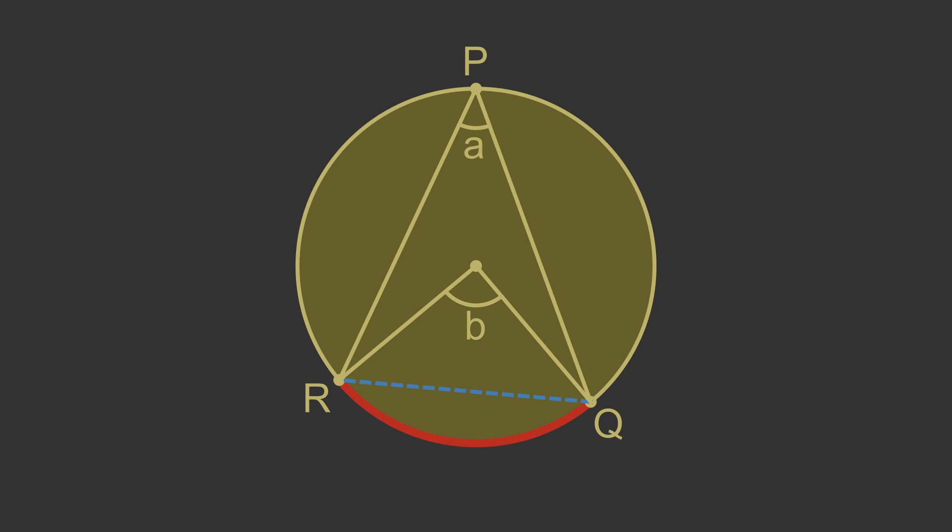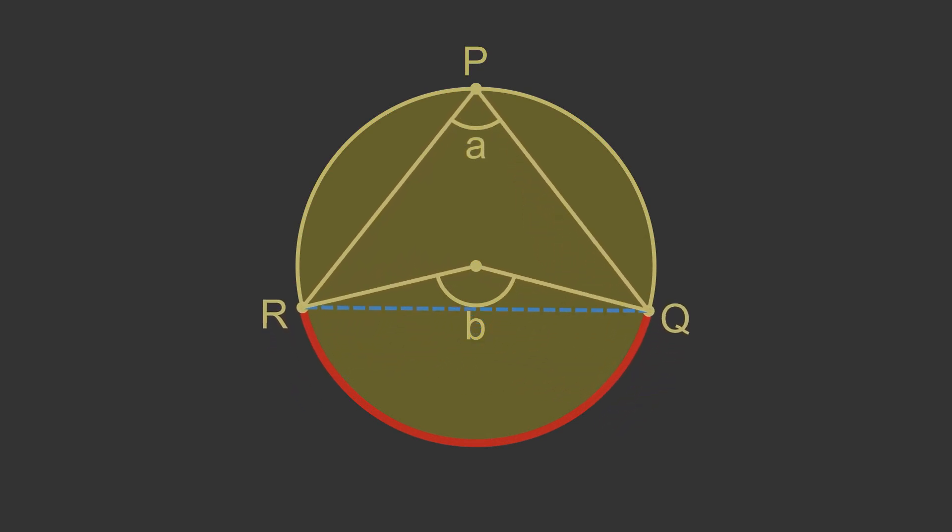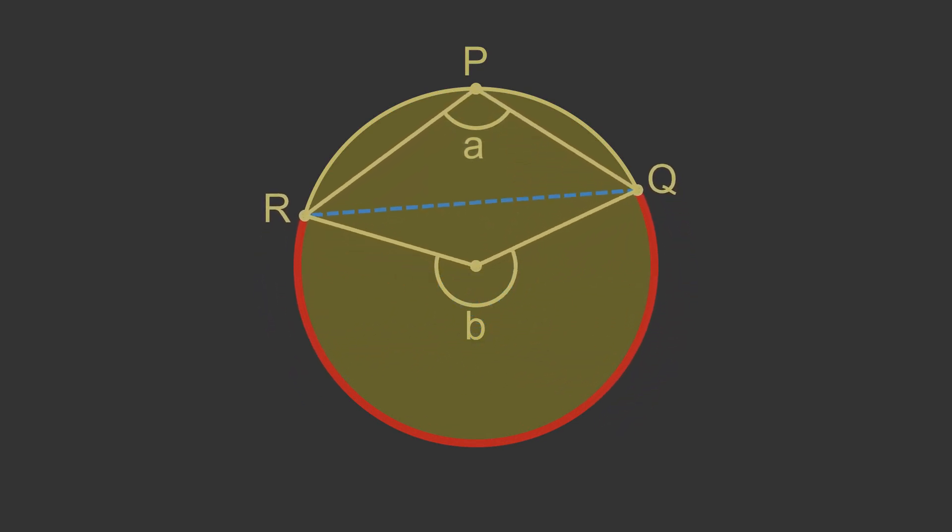We can increase the size of the arc. Eventually the arc will become larger than 180 degrees. At this point the arc becomes a major arc. It is bigger than half the circumference.